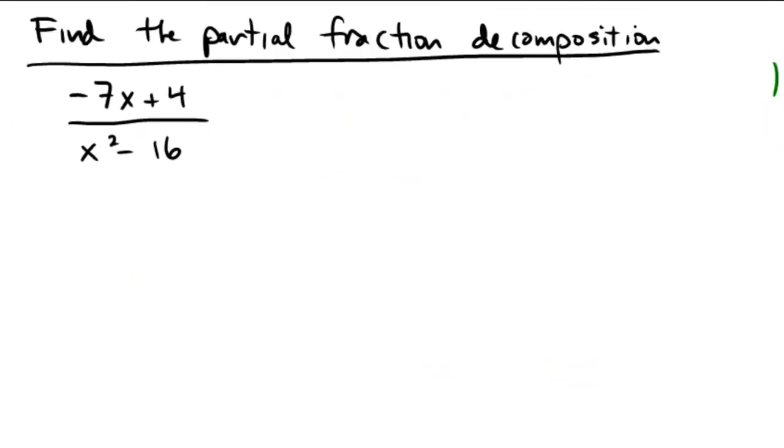We're going to do a partial fraction decomposition here. It's a technique that's very useful for when you get to calculus. So let's take negative 7x plus 4, and in the bottom, we're going to factor that x squared minus 16 into x plus 4 times x minus 4.